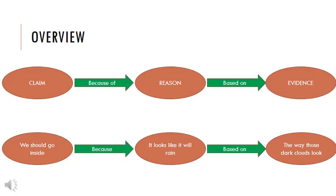To give a brief overview and review: we have a claim that is supported because of a reason or set of reasons, and those reasons are true based on the evidence we've found and researched. A very simple example: 'we should go inside' — that's the claim — 'because it looks like it will rain' — that's the reason — and I'm basing that assertion on the way those dark clouds look. The dark clouds make me think it's going to rain, so I say it looks like rain, so I say we should go inside. Claim, reason, evidence.